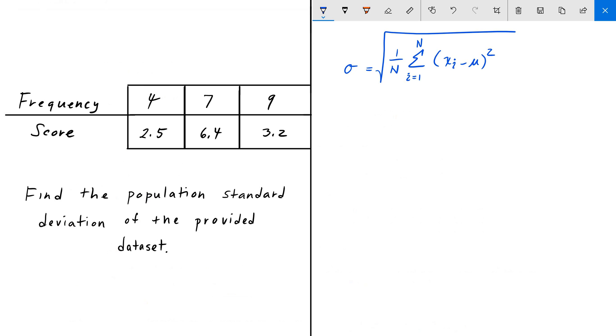Here I've written the definition of standard deviation, where n is the total number of elements, x are these scores here (2.5, 6.4, and 3.2), and we need to calculate the mean in order to find the standard deviation. The first thing that we do is calculate the weighted mean or weighted average.